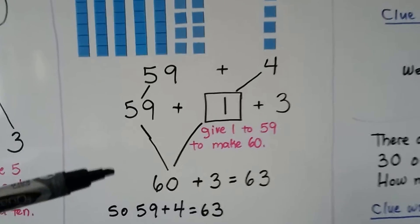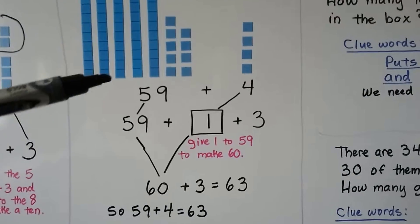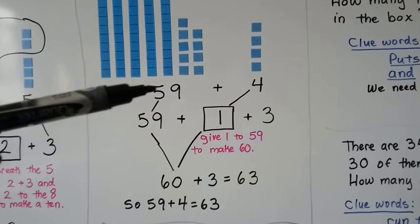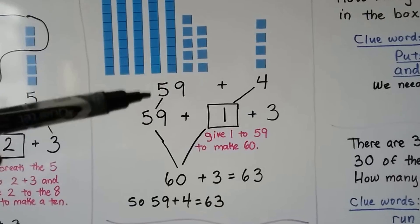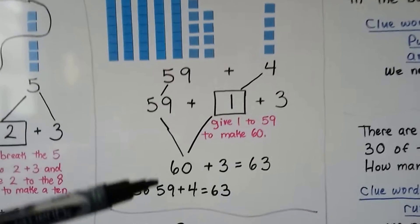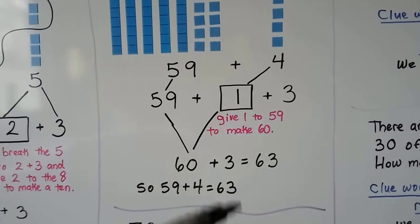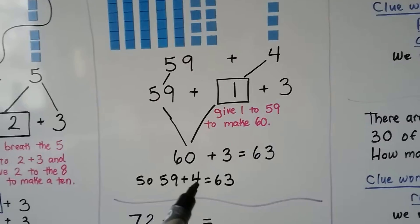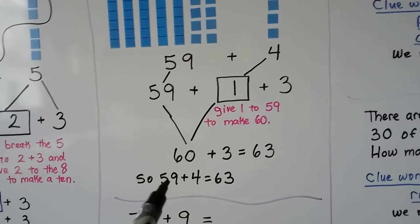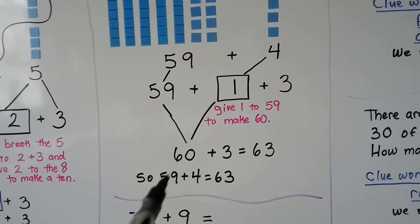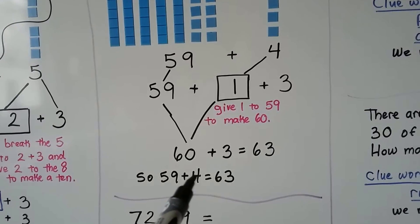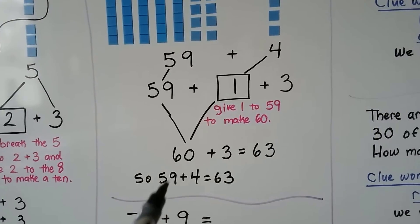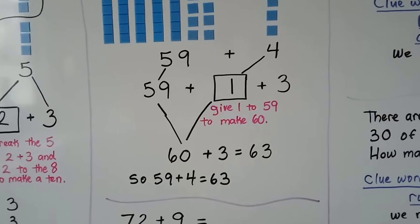That means our initial number sentence, fifty-nine plus four, is equal to sixty-three. We just took one from the four, gave it to the fifty-nine and made a sixty. It now became a three. We have sixty-three.